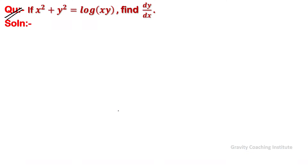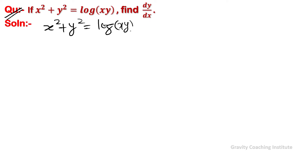Question: if x square plus y square equal to log x into y, find dy/dx. So here x square plus y square equal to log xy and we find dy/dx, differentiate both sides with respect to x.